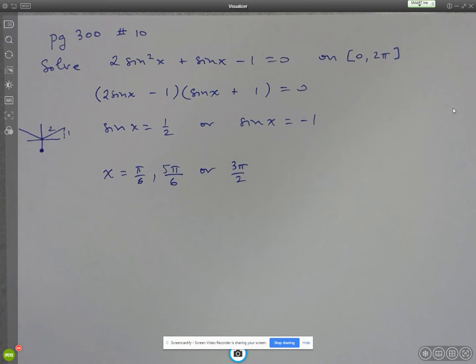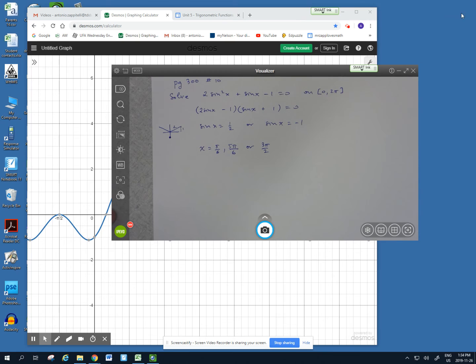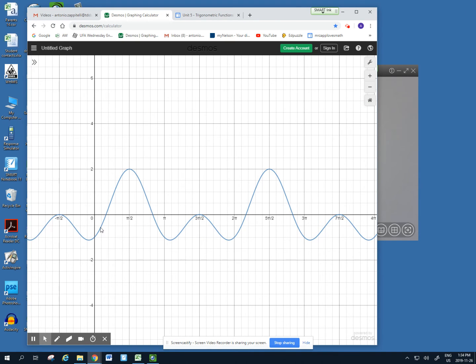Okay. They also ask us to verify graphically. So let's just see what this looks like graphically. So what I did is I plotted this equation here on Desmos. And then it was a matter of determining where it was equal to 0. So if we take a look at this here. So I've got it plotted.